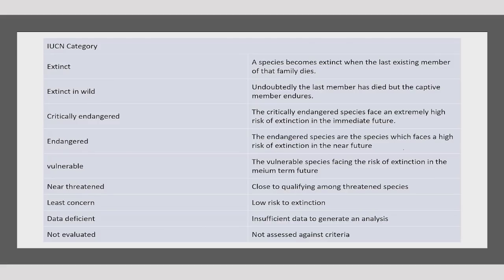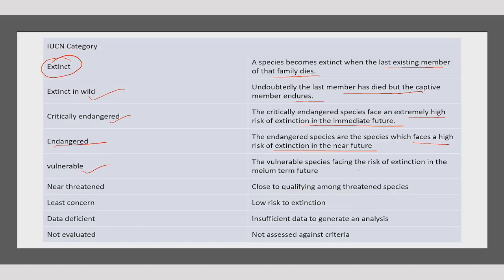The IUCN has given various categories: Extinct — the species becomes extinct when the last existing member of that family dies. Extinct in the Wild — the last member has died but a captive member endures. Critically Endangered — faces an extremely high risk of extinction in the immediate future. Endangered — faces a high risk of extinction in the near future. Vulnerable — facing risk of extinction in the medium-term future. Near Threatened, Least Concerned, Data Deficient, and Not Evaluated — not assessed against criteria.